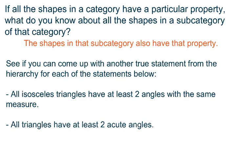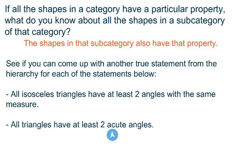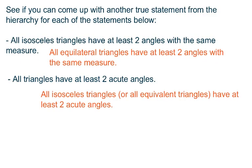Let's see if you can do a little work for yourself. Can you come up with another true statement from the hierarchy for each of the statements below? If I say all isosceles triangles have at least two angles with the same measure, what else would have to be true? Think about that and jot something down. And then: all triangles have at least two acute angles — angles between 1 and 89 degrees. What has to be true if all triangles have that? When you think you have an answer, come on back and see if it matches what I came up with.